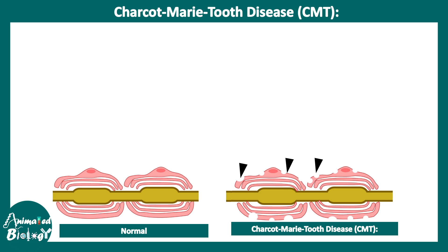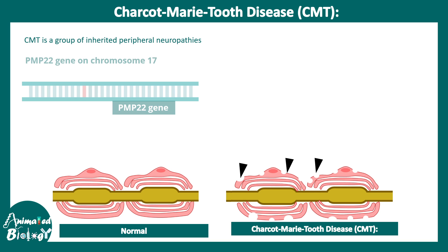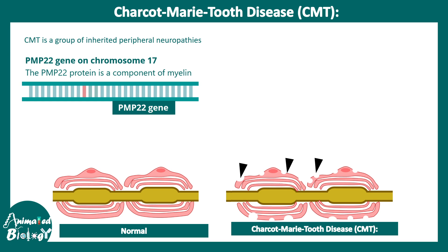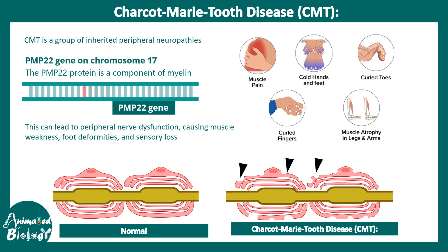Charcot-Marie-Tooth disease (CMT) is another disease involving Schwann cells, caused by a mutation in the PMP22 gene, which encodes a protein that is a component of myelin. This disease involves muscle pain, cold hands, curled toes and fingers, and muscular atrophy — all due to problems in Schwann cell myelination.